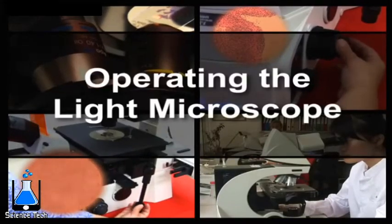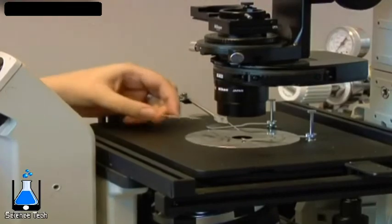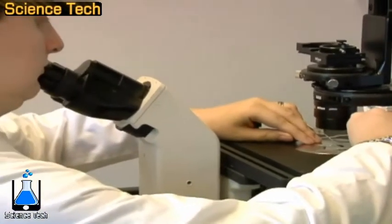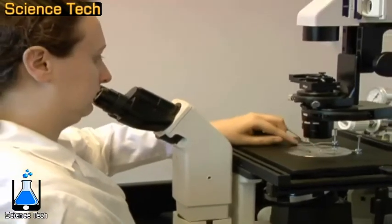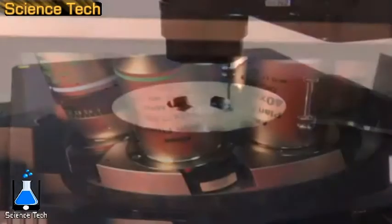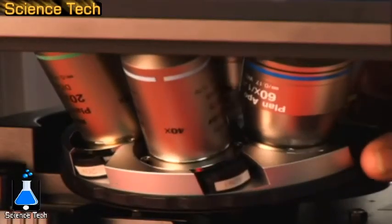To begin using the light microscope, place a sample containing the region of interest on the microscope stage, center it directly over the objective, and secure it in place using the stage clips. Next, turn on the light source and switch to the lowest powered objective.